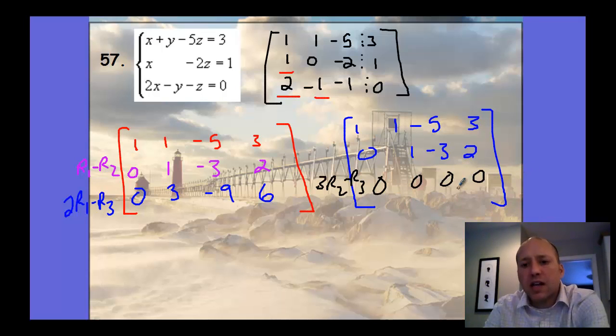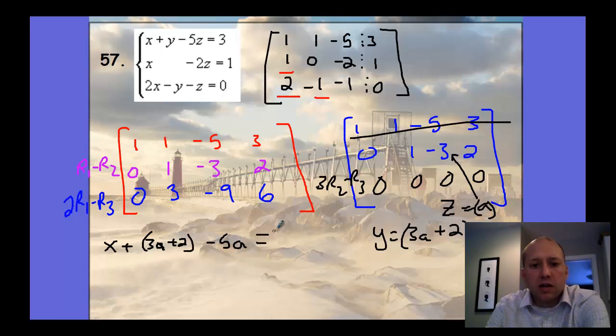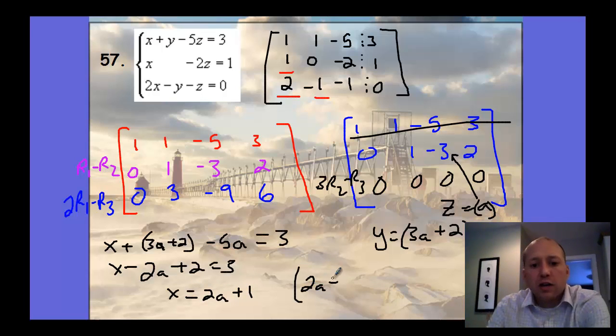So what does this tell us? It tells us that it's infinite solutions. We can write a relationship to show what our solutions are. We say Z here equals A. We're going to back substitute to find our Y value. We'll find Y is 3A plus 2. We have to plug both of these into the original equation, or the equation up here, row 1. So we have X plus Y minus 5Z, which is A, equals 3. We can solve, simplify here, subtract the 2 and add the 2A, so 2A plus 1. Now we can write that as an ordered triple: 2A plus 1, 3A plus 2, and A.